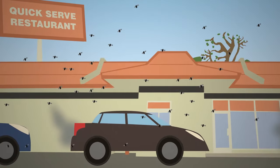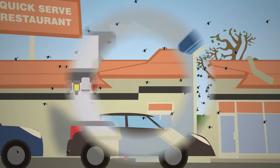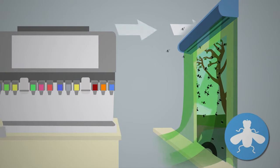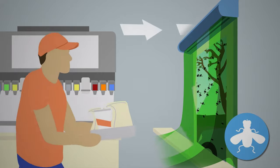In the spring, as bugs emerge to fly around, the air curtain keeps flying insects outside as food and payment are passed back and forth.